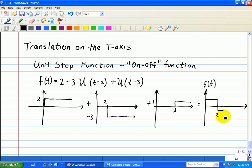This is minus 1, and so it's going to be 0 after 3. So this is our function. That's how you use the step function to draw piecewise defined functions.